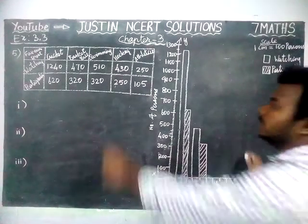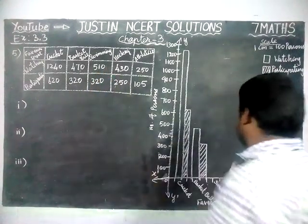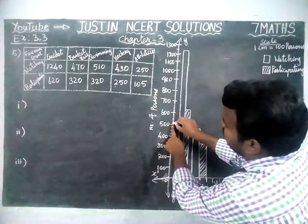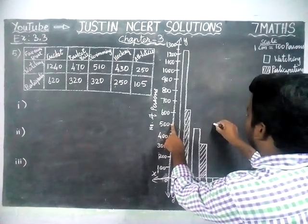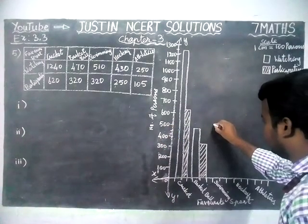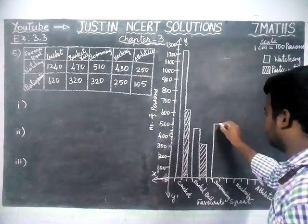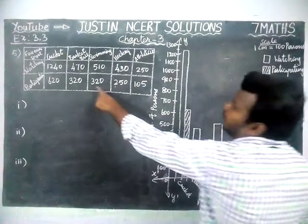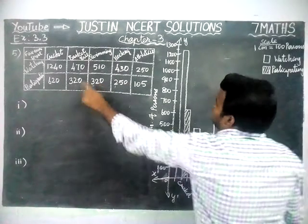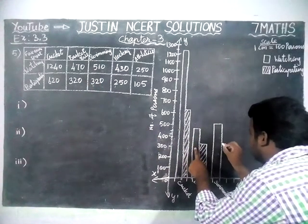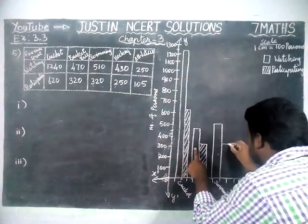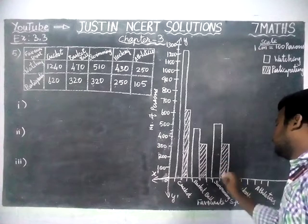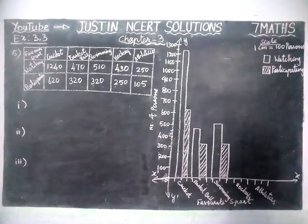Next, swimming. In swimming, 510 members are watching. 500 is here, and after 500 the first line is 510. We mark it at 510. For participating members, only 320 — both basketball and swimming have the same participating value. We draw using the previous bar graph position, and show the differentiation for 320 participating members using the cross line.